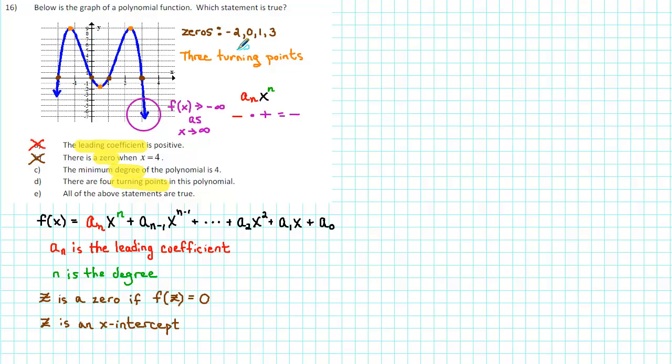Since there are three turning points and not four, we know that D is not the correct answer. And obviously, all of the above statements are true is false, so we can eliminate E as well. C must be the correct answer.